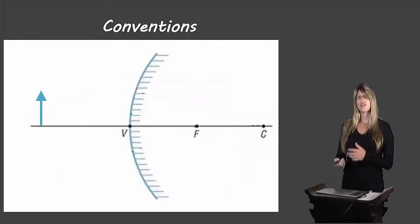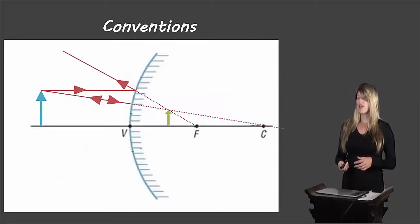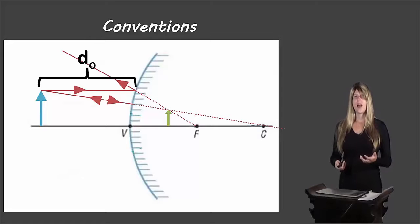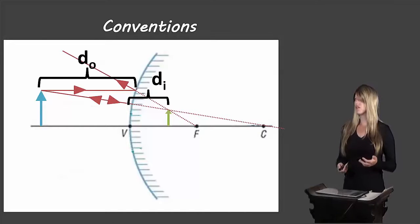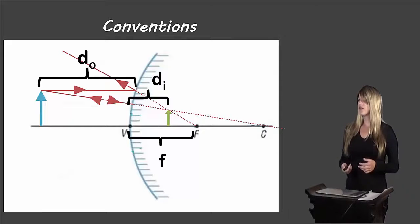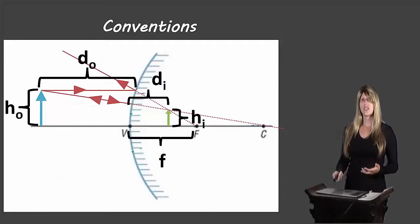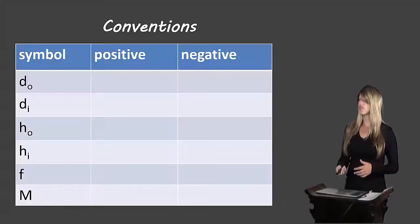Let's take a look at these in the convex mirror. We'll start by drawing our ray diagram, and here we have our object and our image. The distance between the object and the vertex is DO. The distance between the image and the vertex is DI. The distance between the focus and the vertex is F. The height of the object is HO, and the height of the image is HI. We can see the same symbols are used for each of these.